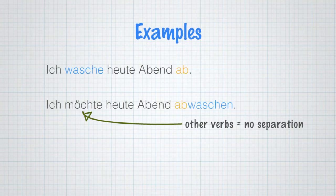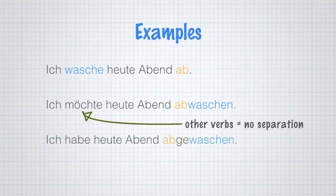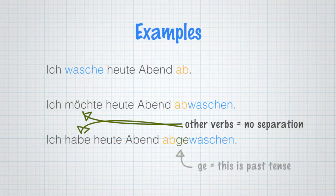Now, if you're looking at a past tense such as the perfect: Ich habe heute Abend abgewaschen. Again, there is no separation of the verb. But the ge that shows you this is a past participle moves in between the prefix and the stem.